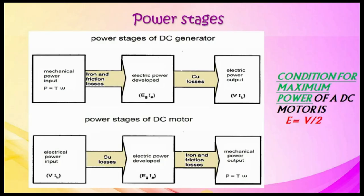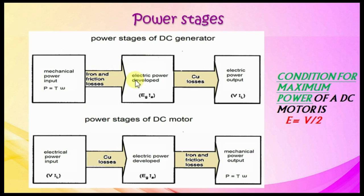Field copper loss is 20 to 30 percent of full-load copper losses. Shunt field copper loss and stray losses are constant losses. Armature copper loss is a variable loss. Condition for maximum power of a DC machine is that EMF equals half of terminal voltage. For a DC generator, input is mechanical power (tau times omega), where tau is torque and omega is angular frequency. Iron and mechanical losses occur, then remaining power converts to electrical power EG times IA, then copper losses reduce this to the output terminal power V times IL.